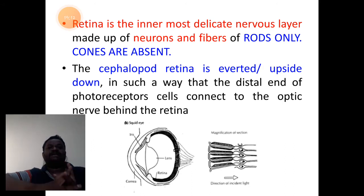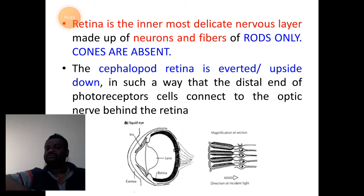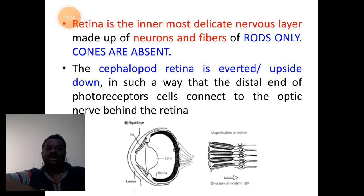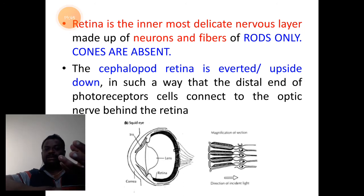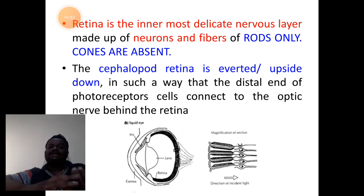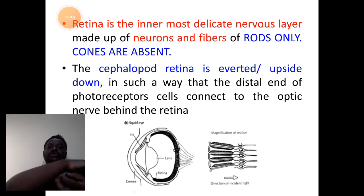We have two layers made up of fibers of rods. Cones are totally absent. The cephalopod retina is averted or upside down such that the distal end photoreceptor cells connect to the optic nerve behind the retina directly.